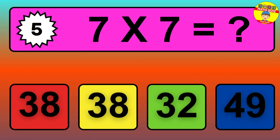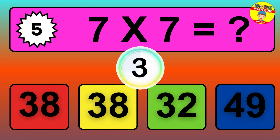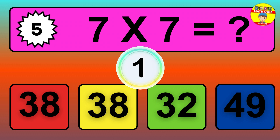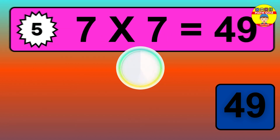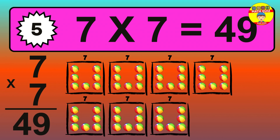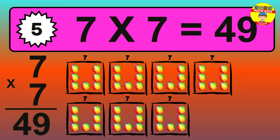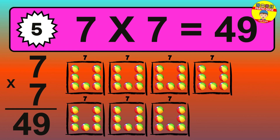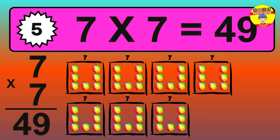Question 5. 7 times 7 equals what? The answer is 7 times 7 is 49. To calculate, we have 7 groups with 7 balls each one. So, how many balls do we have? 49 balls.